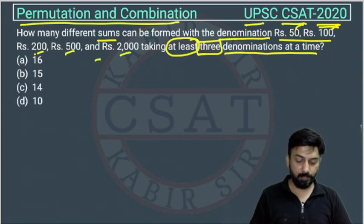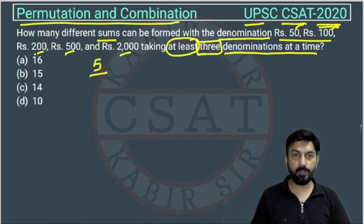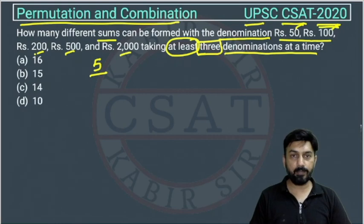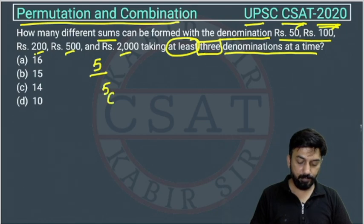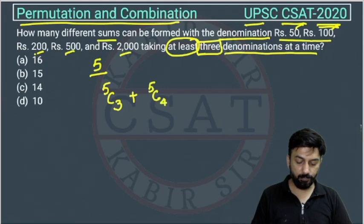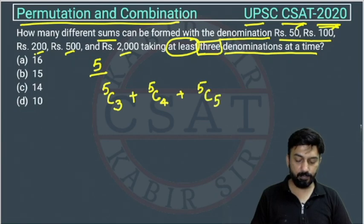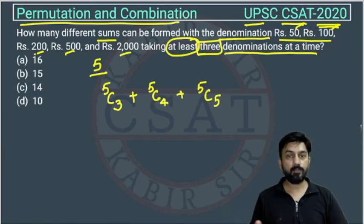Out of five denominations, we have to select at least three. So this is a problem of combination. We can take any three — so 5C3 — or we can take four out of five, or we can take all five out of the five denominations.